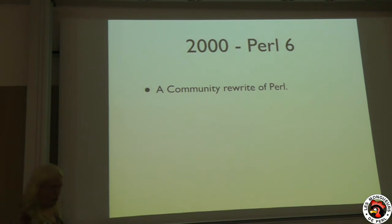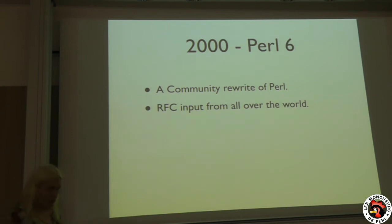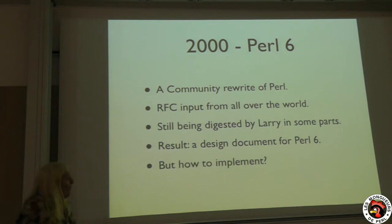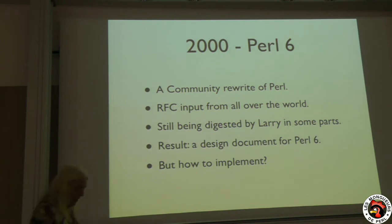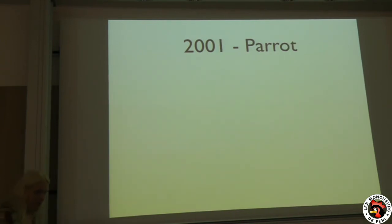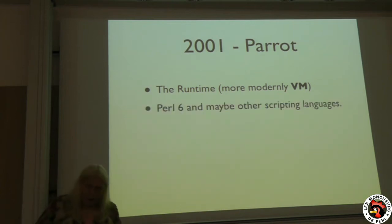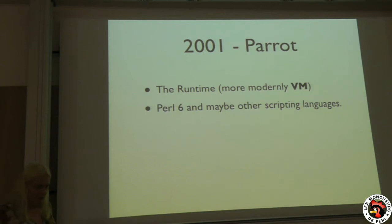If you want to actually see the announcement, it's there. But this project was actually started in 2000. What was really important about this project was that it was actually the inspiration for Perl 6. So in 2000 we had the start of Perl 6, which was a community rewrite of Perl. It got a lot of input from all over the world, and some of them are still being digested by Larry. But the result was a design document — actually, several design documents. But then, how are we going to implement all this? Nice ideas everywhere, but we need to implement those.